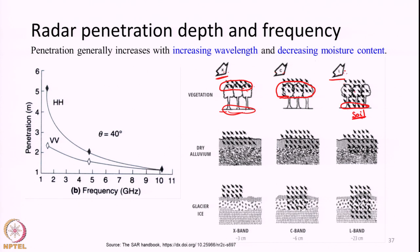By changing the observation frequency or wavelength, we may get information about different components of vegetation — just the leaves, or leaves plus woody parts, or even the underneath soil. Longer the wavelength, more will be the penetration. Also, higher the moisture content, lower will be the penetration. Additionally, cross-polarized radar images like HV or VH may contain information about underneath-canopy volume scattering elements like trunks, stems, and branches, whereas like-polarized images may contain information about the top surface canopy from surface scattering. Volume scattering tends to depolarize the signal.